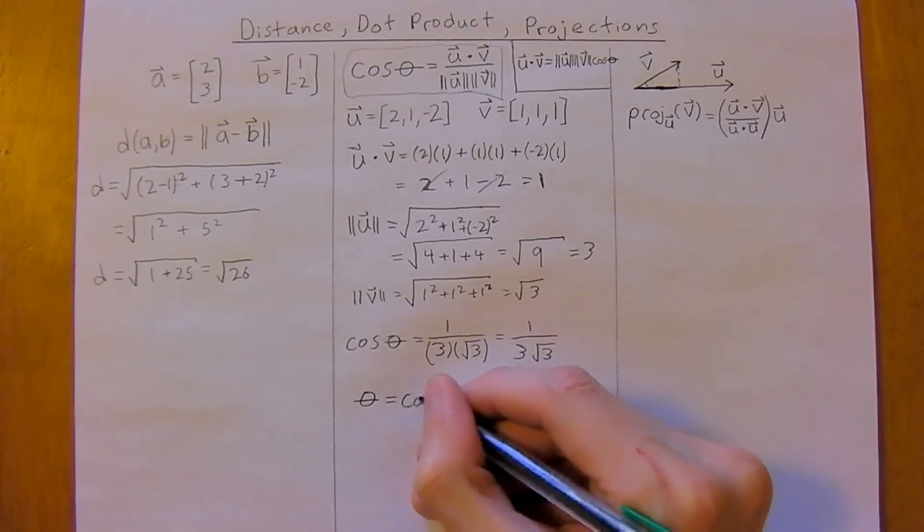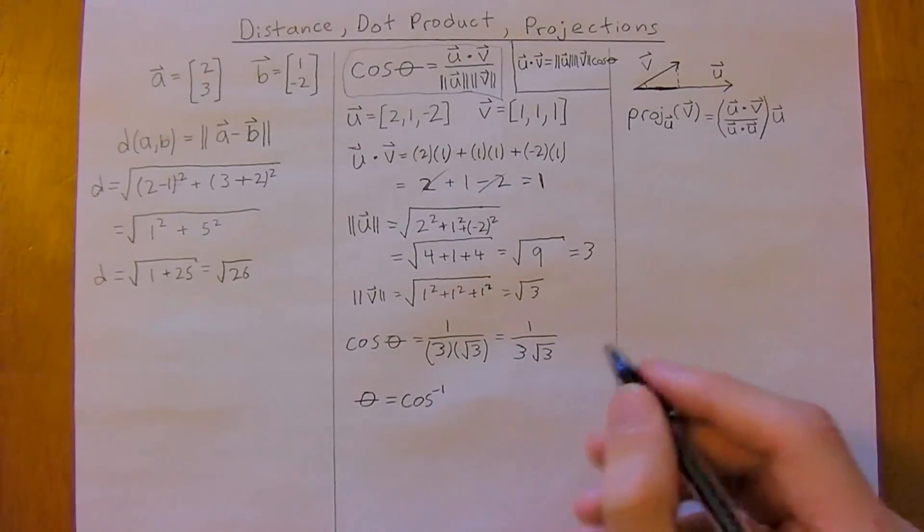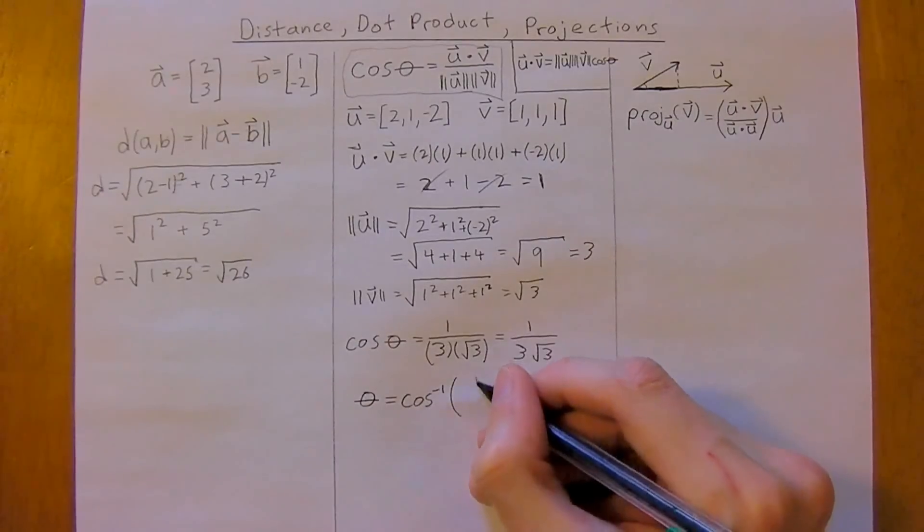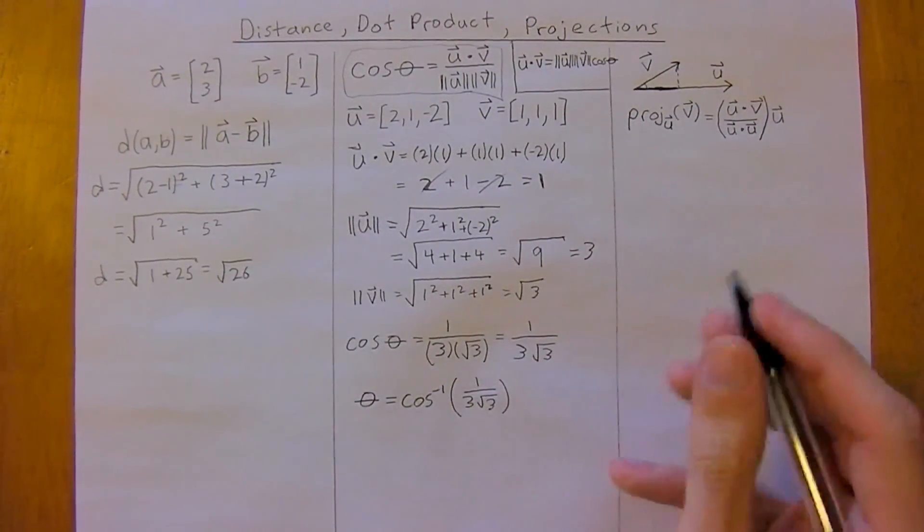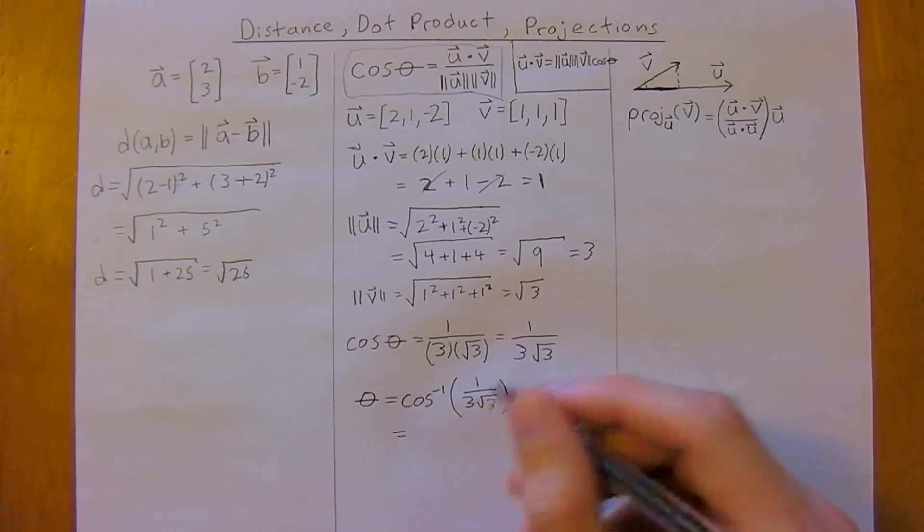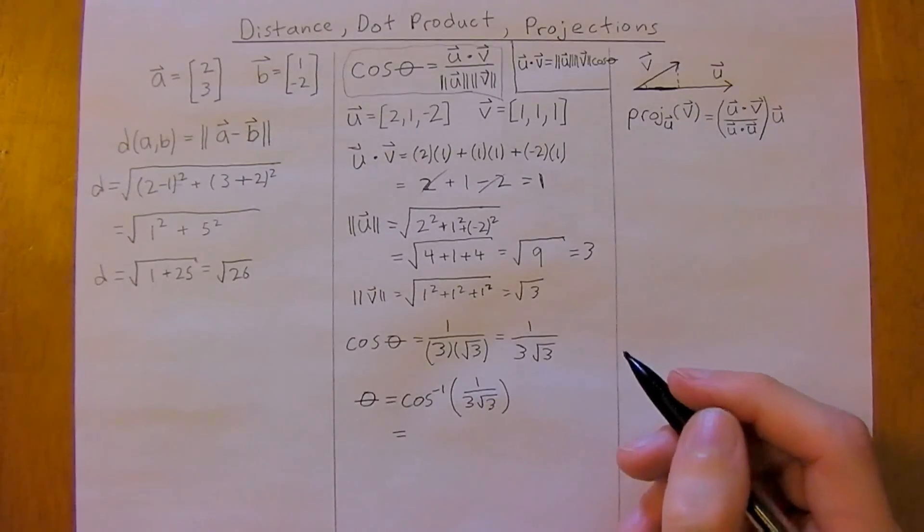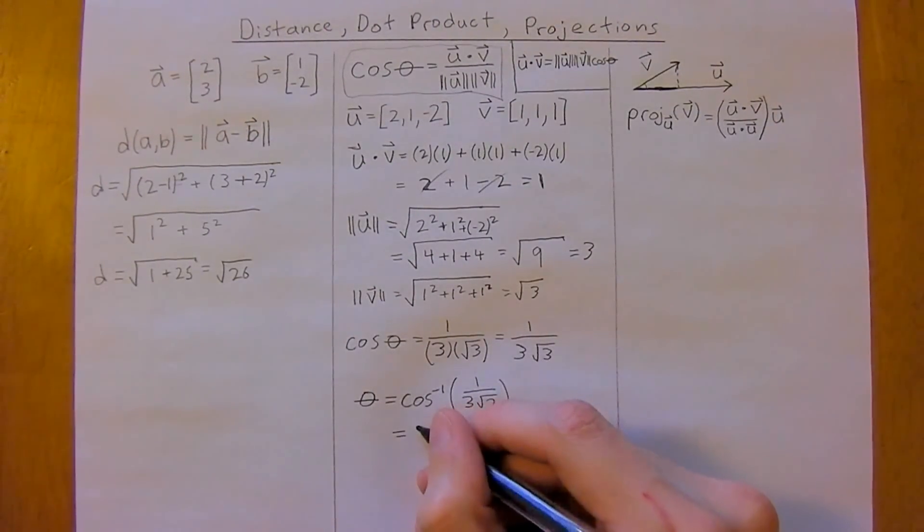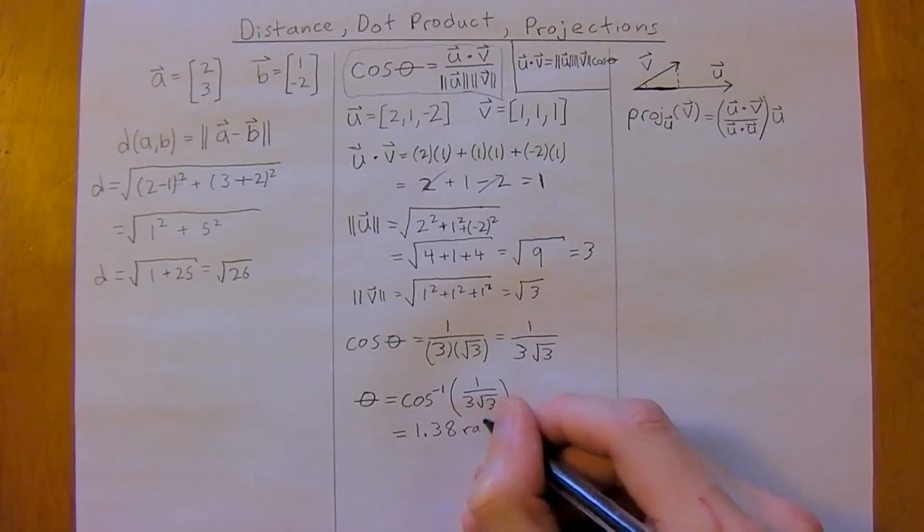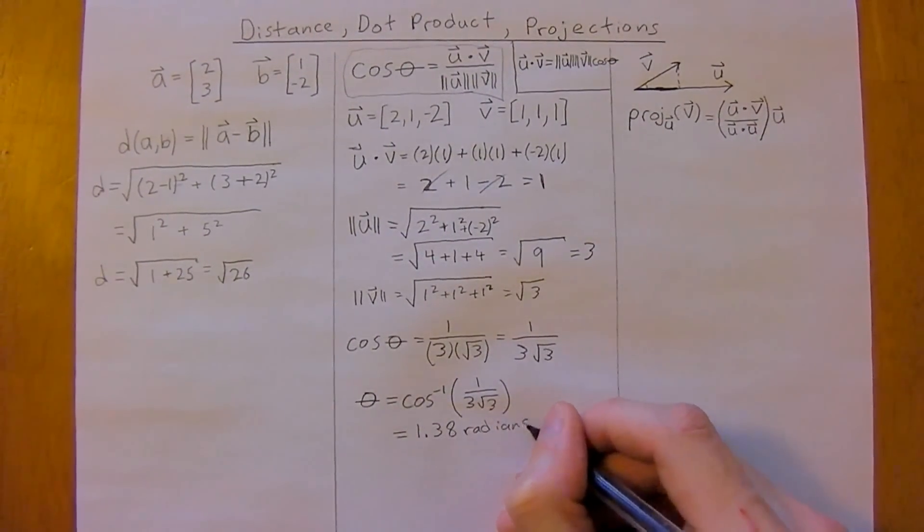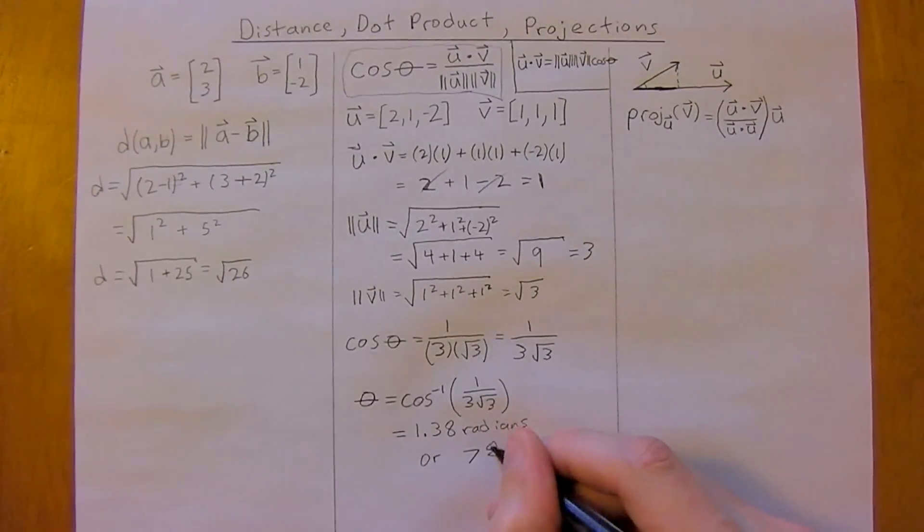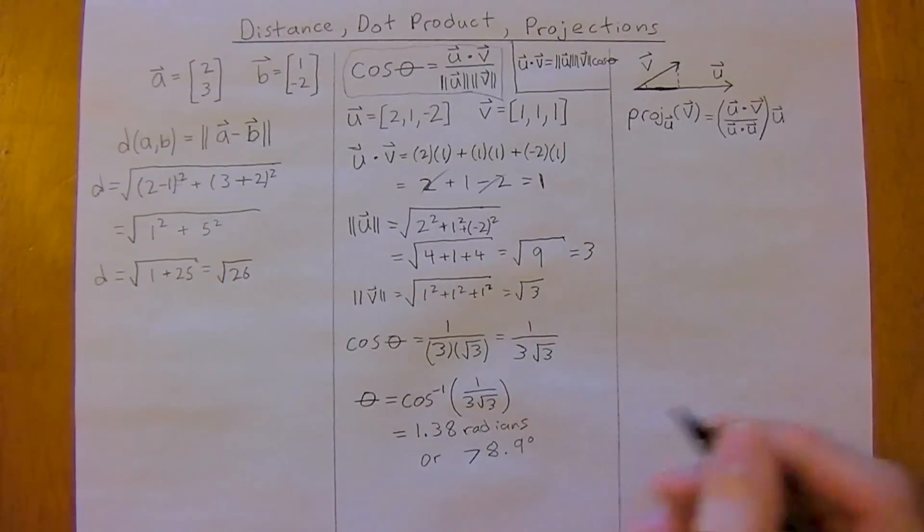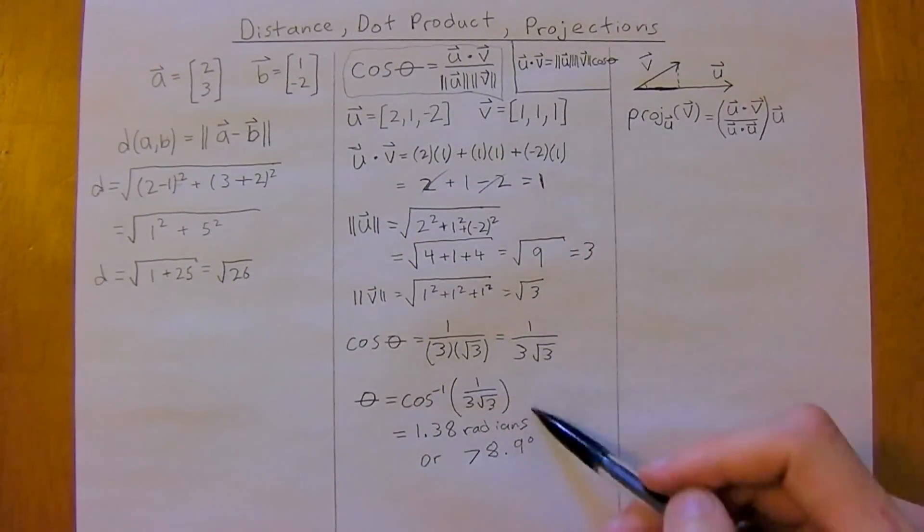so cosine inverse of 1 over 3 root 3, and if you plug it in, plug this into your calculator, this will come out to, in radians, about 1.38 radians, or degrees mode, about 78.9 degrees. So that's pretty straightforward,